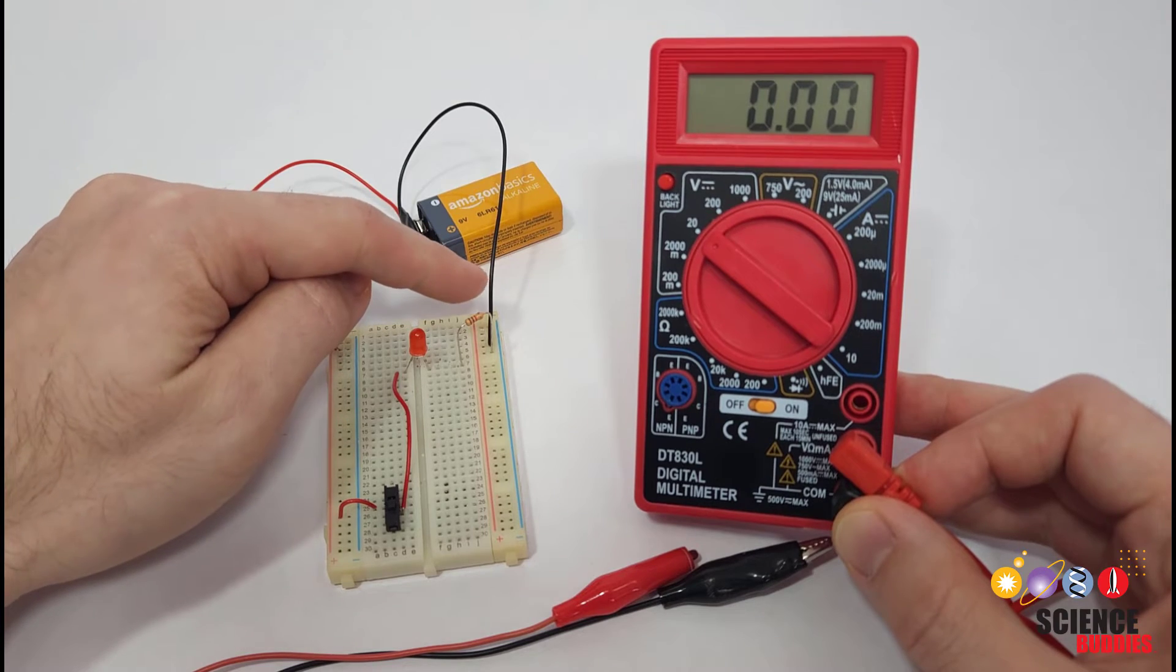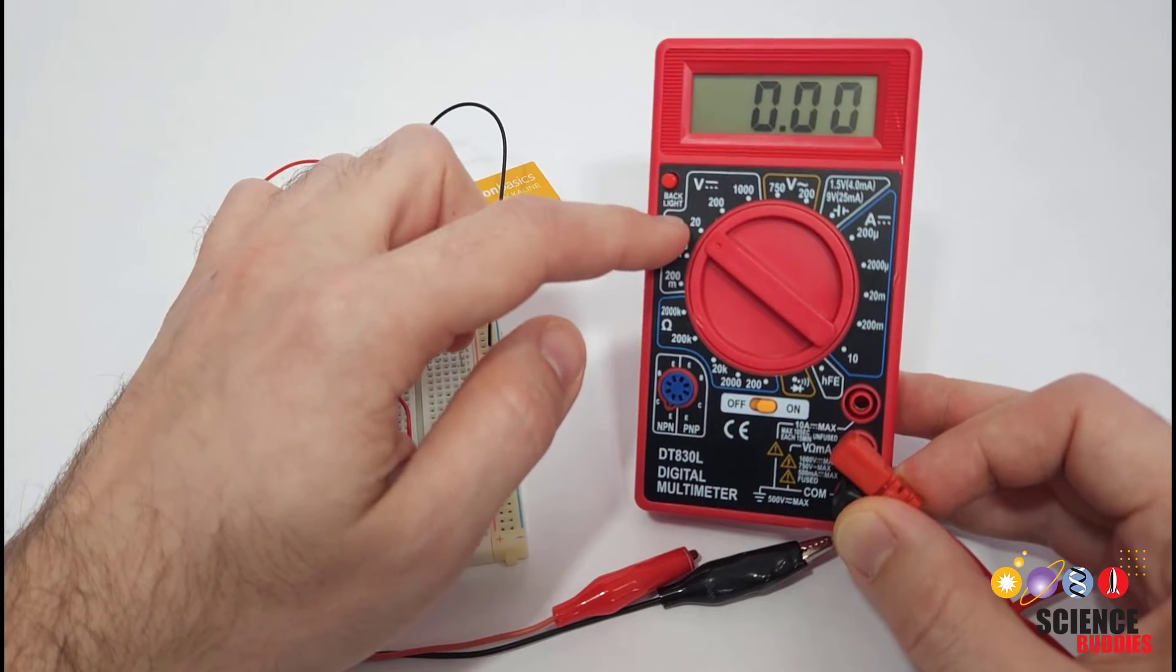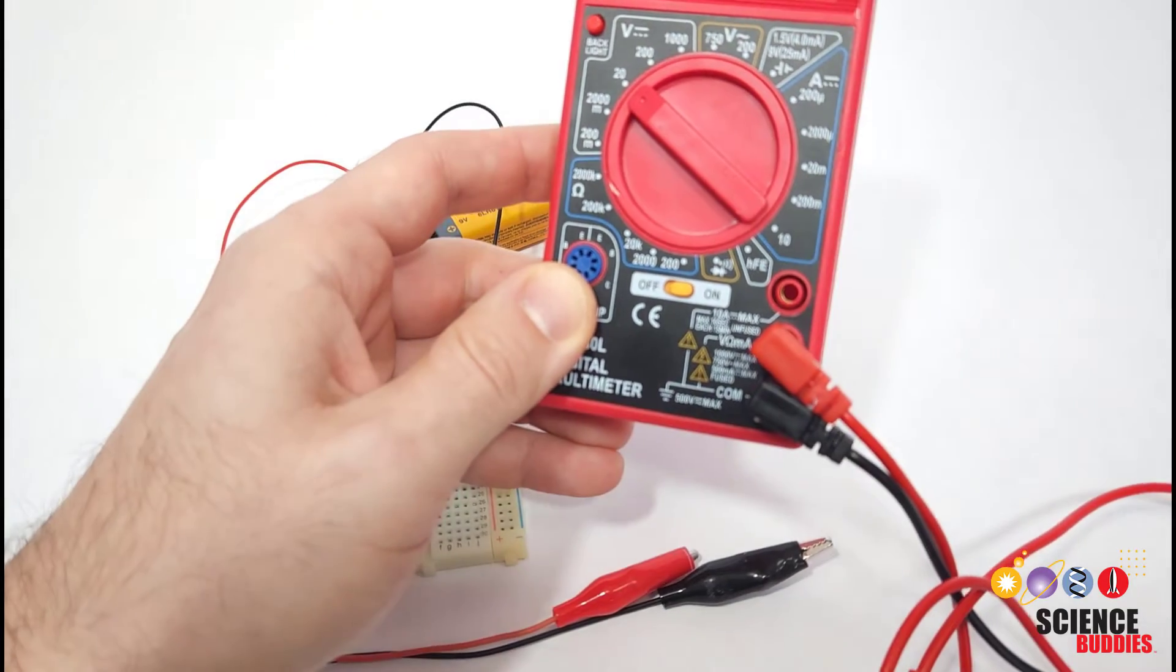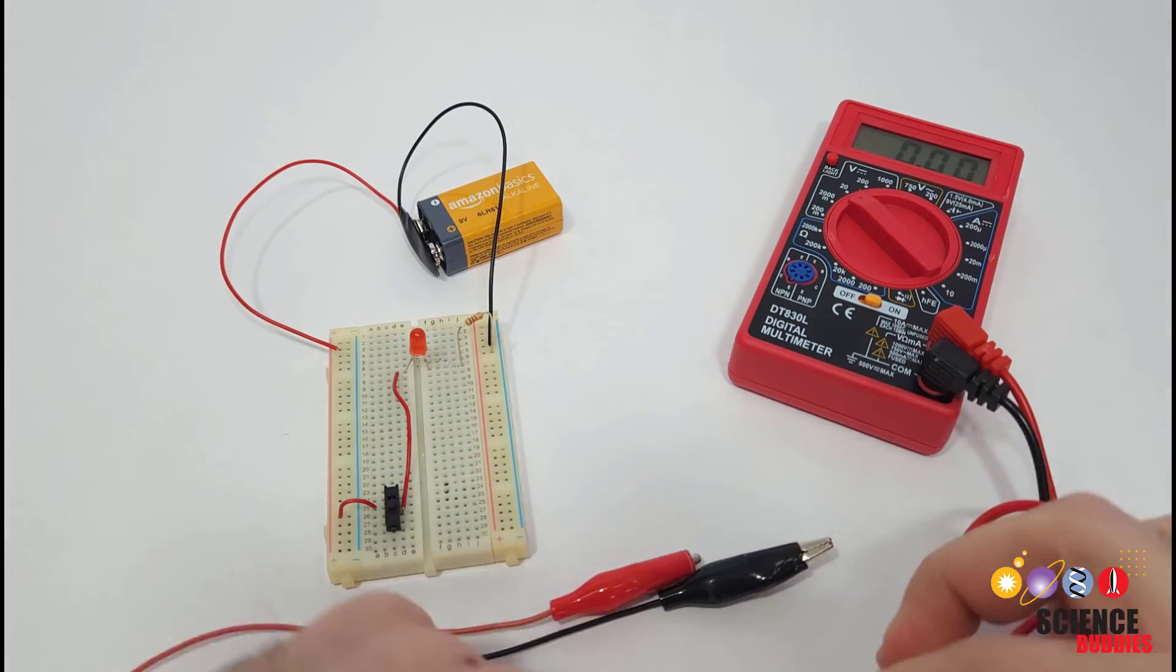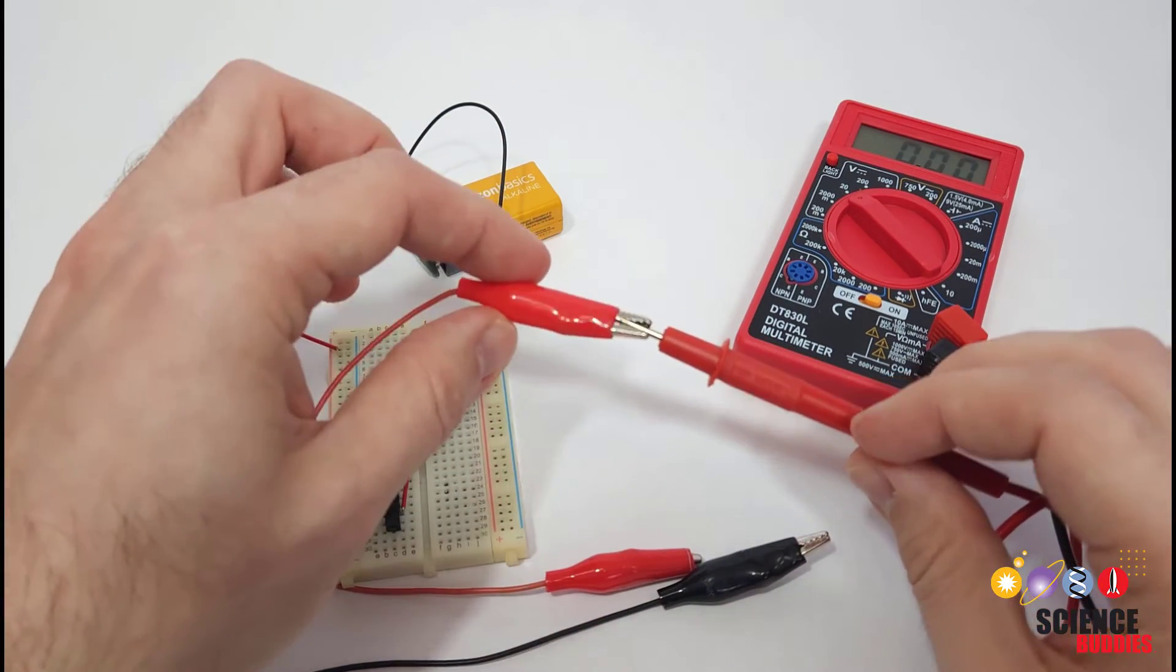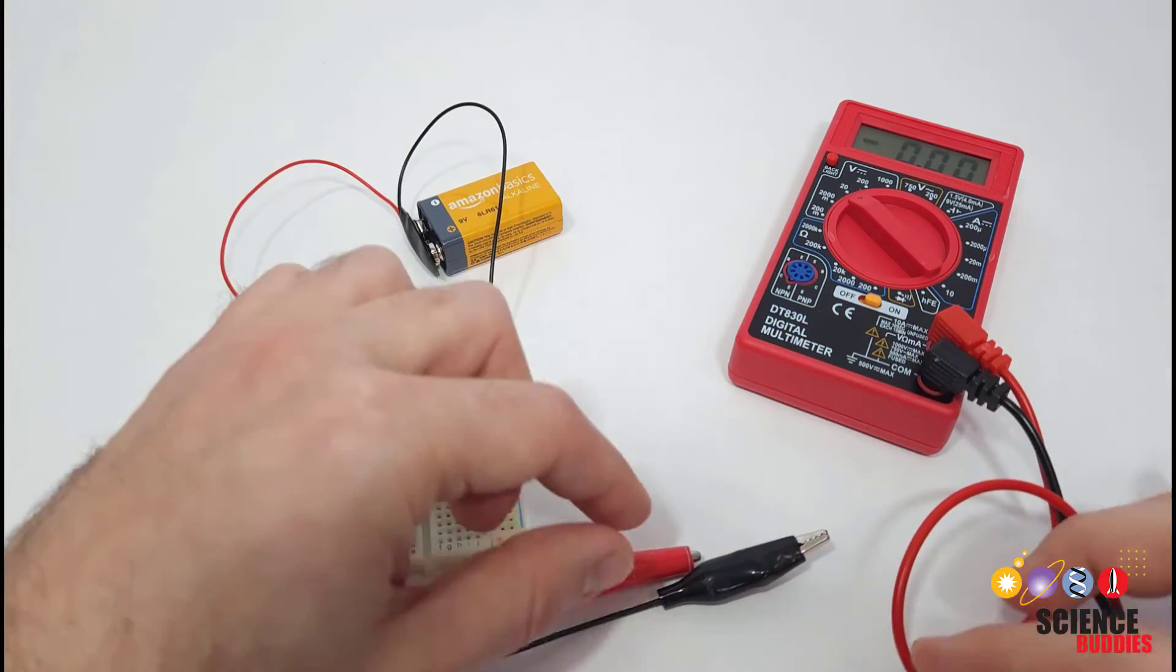To measure the voltage drop across the resistor, I'm going to set my multimeter to measure DC voltage in the 20 volt range. I'm going to plug the black probe into the COM port and the red probe into the voltage measurement port. I'm then going to use alligator clips to connect to my multimeter probes because that will let me set it up for hands-free operation instead of needing to hold the probes with my hands.